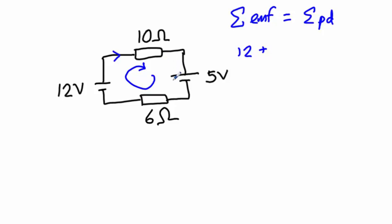Here we have another EMF. Now, this EMF, this is the positive terminal on the battery here. So, that means that the EMF here is pushing in the opposite direction to our loop. So, we need to write that as minus 5.